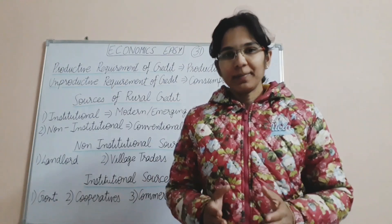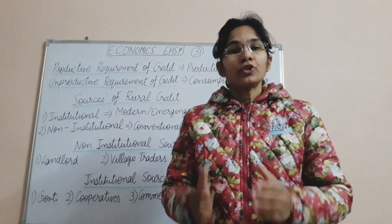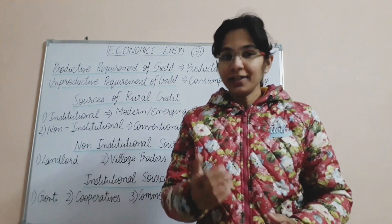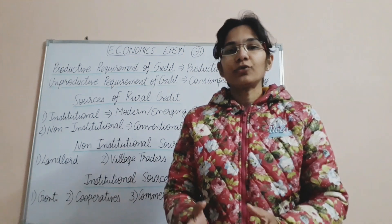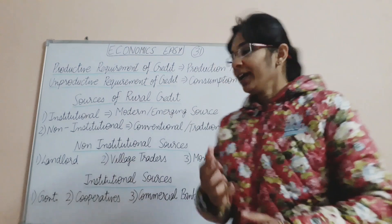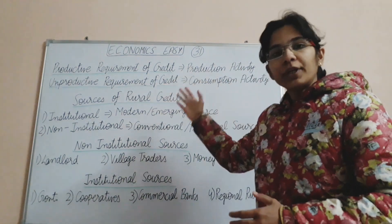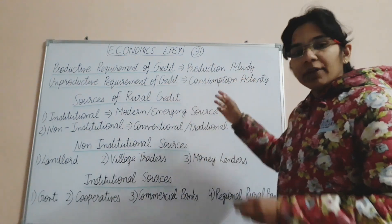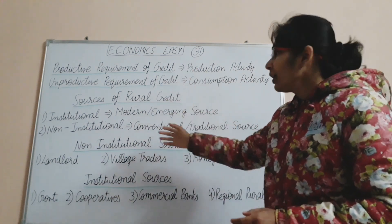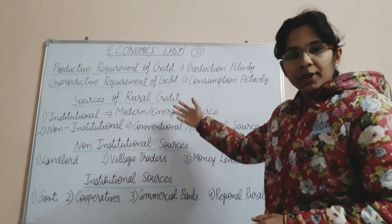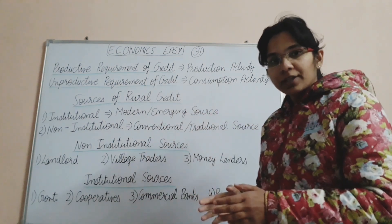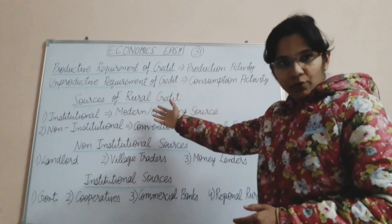The next point to remember for one mark: credit needs can also be classified as productive requirement credit — what is needed for production activities — and unproductive requirement credit, which covers consumption activities. When credit is needed for consumption activity, it is called unproductive requirements for credit.